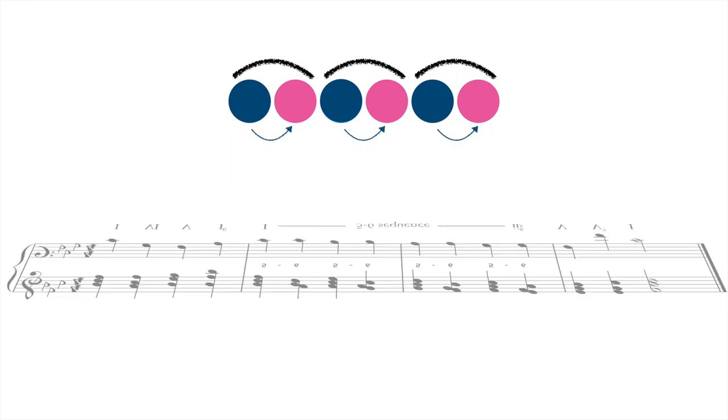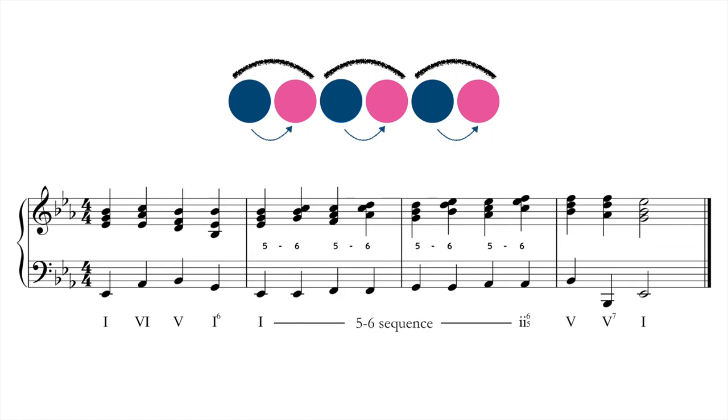Of course, one could enrich a sequence with secondary dominants, making the overall context much more chromatic. Here's a simple diatonic sequence, like the ones we looked at in our lesson on sequences.